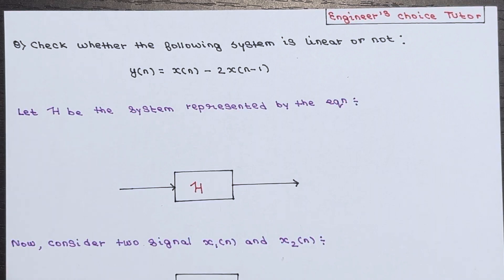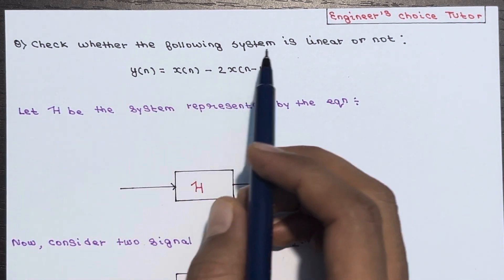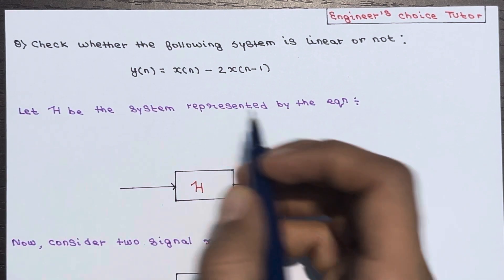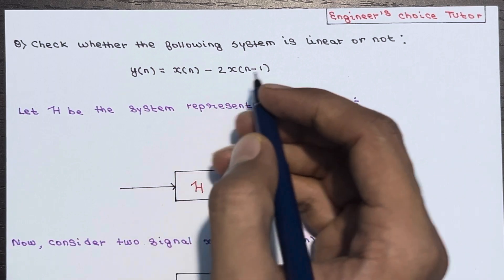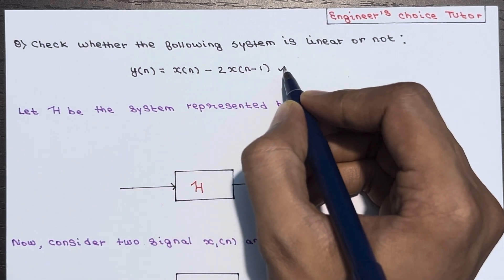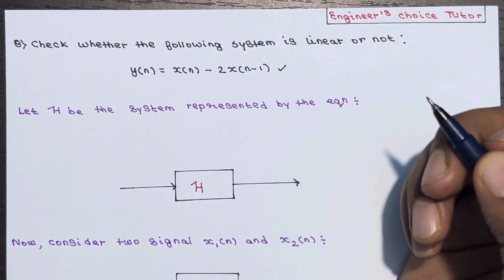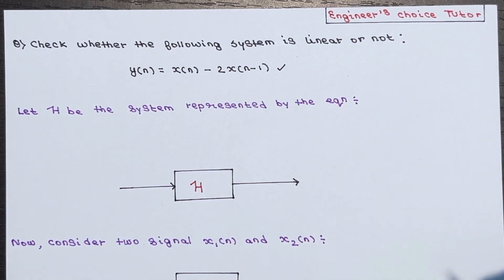Hi everyone. In this lecture we will be looking at one more numerical based on linearity of a system. So basically you have to check whether the following system is linear or not. The system equation is given as y(n) = x(n-2) · x(n-1), and we have to check whether the system is linear or not.